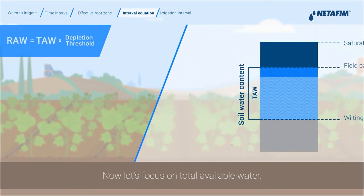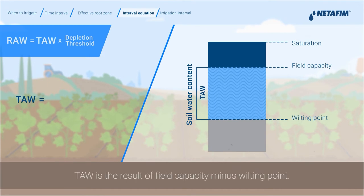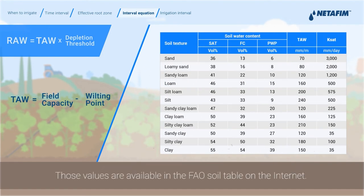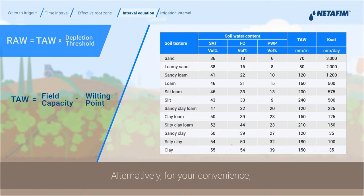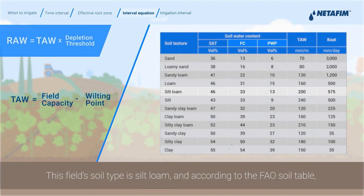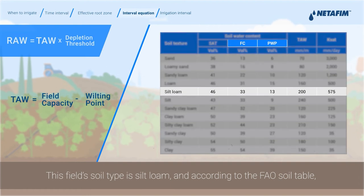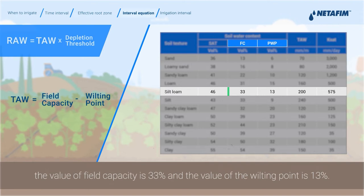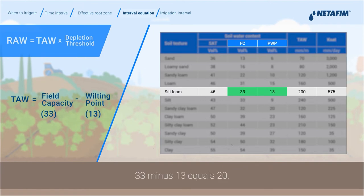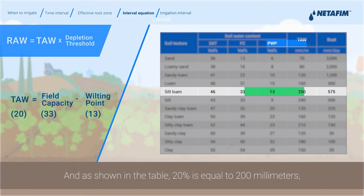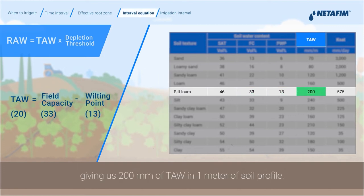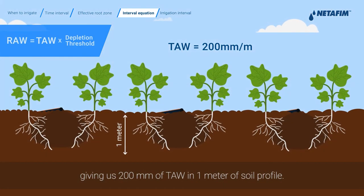Now let's focus on total available water. TAW is the result of field capacity minus wilting point. Those values are available in the FAO soil table on the internet. Alternatively, for your convenience, you can use the link in this video's description below. This field's soil type is silt loam, and according to the FAO soil table, the value of field capacity is 33% and the value of the wilting point is 13%. 33 minus 13 equals 20, and as shown in the table, 20% is equal to 200 millimeters, giving us 200 millimeters of TAW in 1 meter of soil profile.